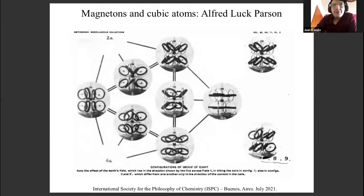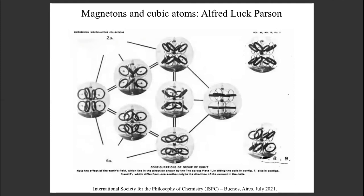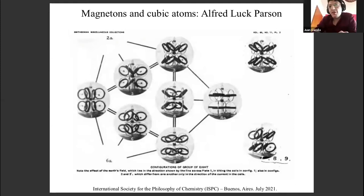The important part of Parsons' models was that he was trying to see how different electric inputs can vary the disposition of the magnetons in space — just to try to see how those magnetons can interact with other magnetons in order to describe how a molecule can be structured in space.